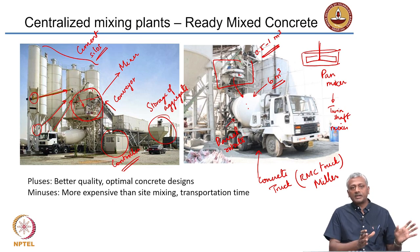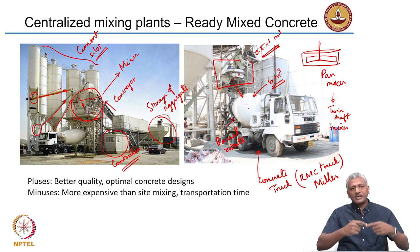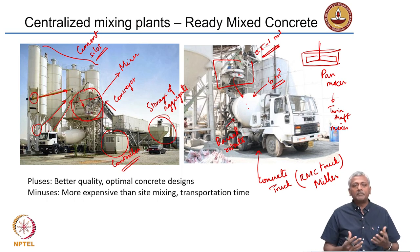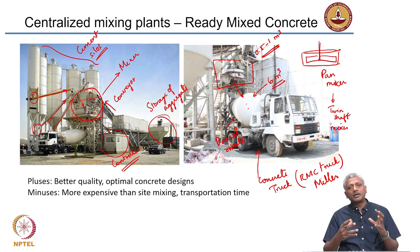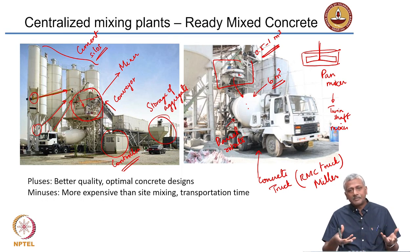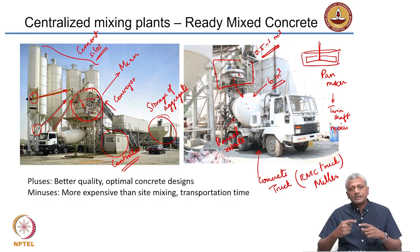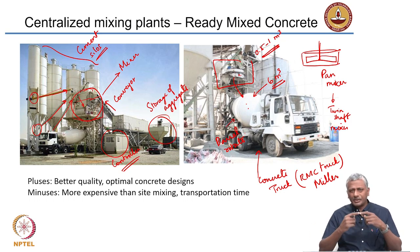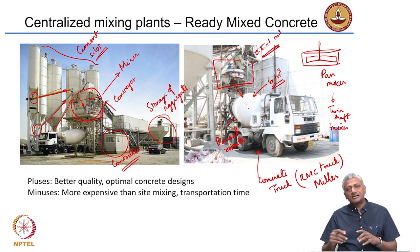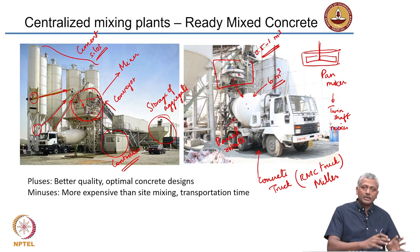The barrel can be rotated to continue mixing the concrete being dumped from the centralized plant. When these trucks travel from the plant to the job site, they have a very slow rotational movement — because they do not want the concrete inside to set or to start separating. When the truck reaches the job site, the drum is rotated at a faster speed to homogenize the concrete before it is discharged into the formwork.